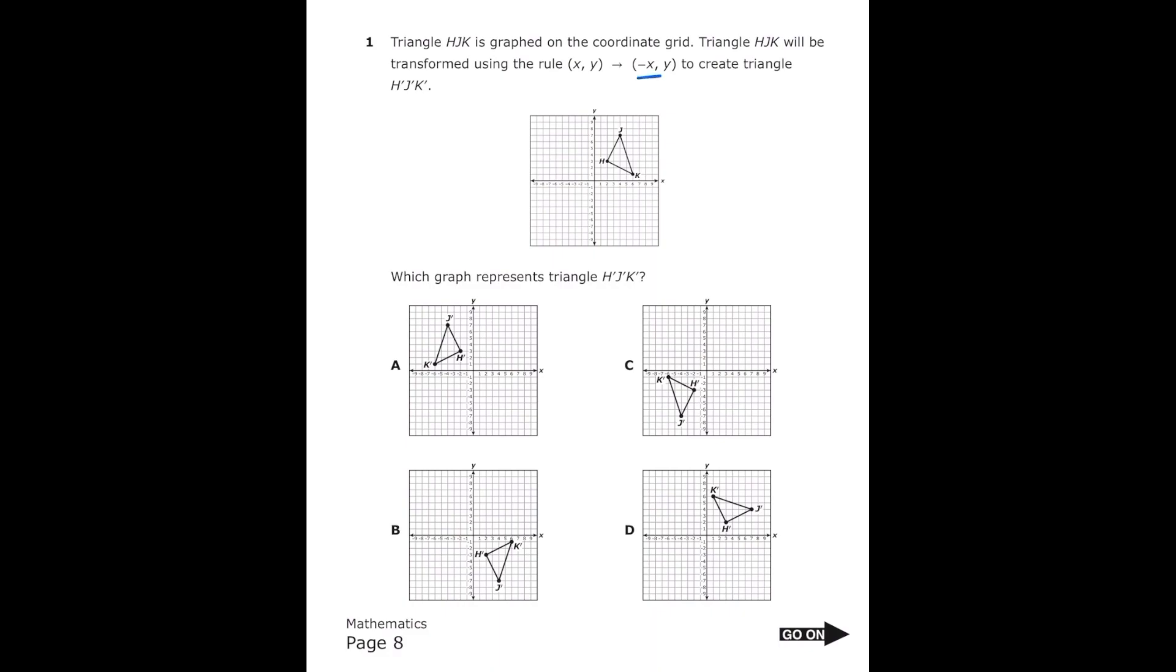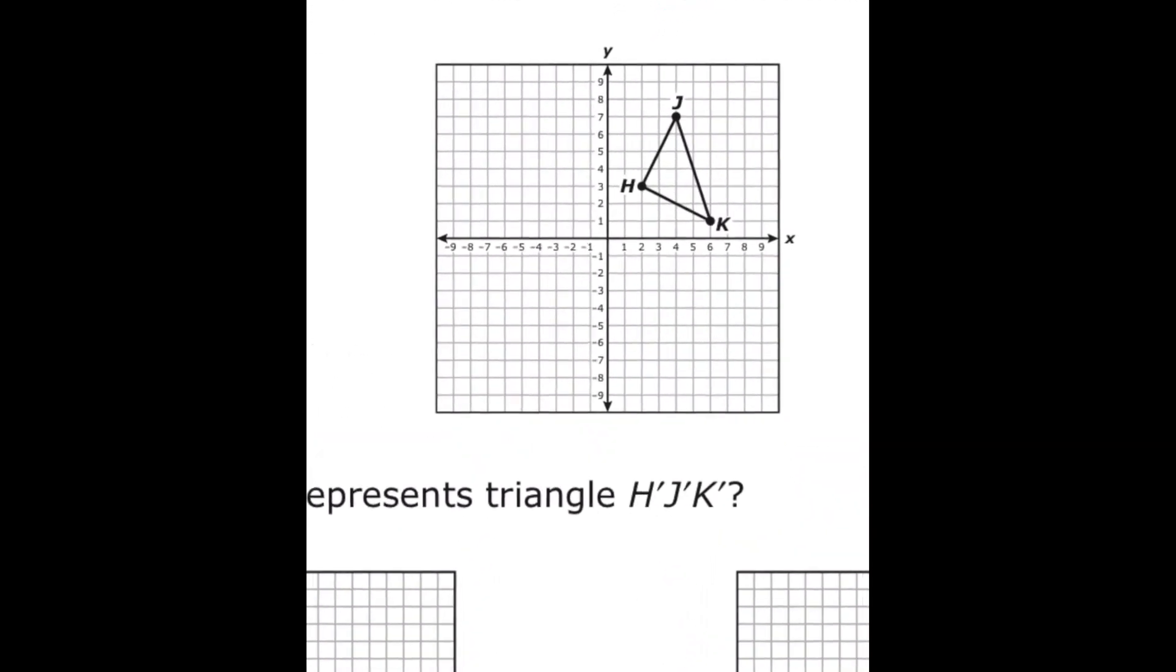So the only thing that's going to change is our x value and that negative sign just means that the x coordinates in each point are going to flip signs.